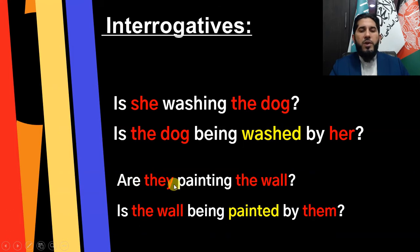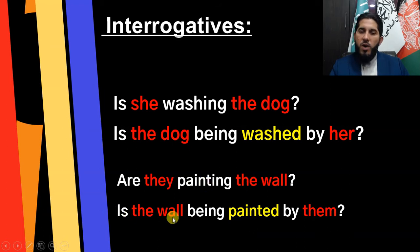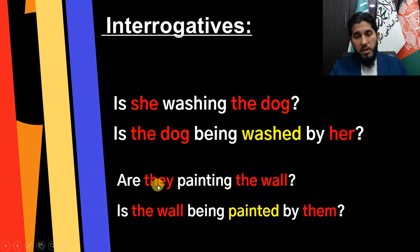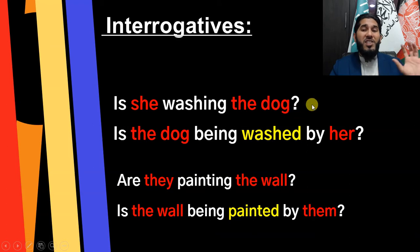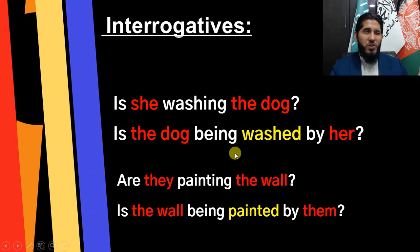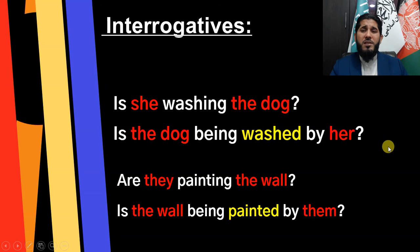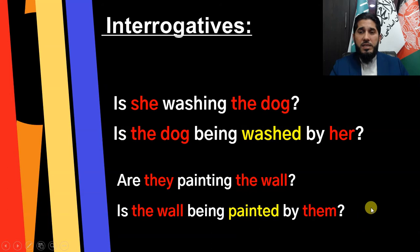Another example: 'Are they painting the wall?' 'They' is the subject, 'painting' is the main verb, and 'wall' is the object — the receiver of this action. Passive: 'Is the wall being painted by them?' The object 'wall' became the subject of the passive sentence and 'they' became the object of the preposition. Short answers: active — 'Yes, she is / No, she isn't'; passive — 'Yes, it is / No, it isn't.' If you know the pet's gender, you may say 'Yes, he is' or 'Yes, she is.' For the wall: 'Yes, it is / No, it isn't.'